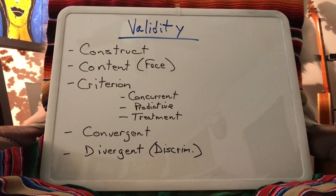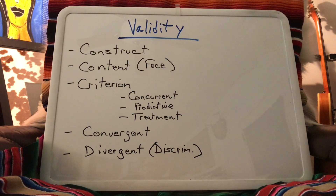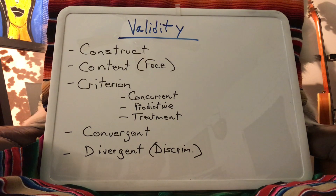Getting three professors together to observe, rate, and compile data is incredibly time-consuming, so it's really helpful if a simple pencil-paper or computerized test can accurately substitute. With predictive validity, we hope to give a test that can predict future performance — such as the SAT, ACT, or GRE. We know these can predict to some extent your first-semester GPA in college or graduate school, though they're not terribly strong predictors. The goal is to use a test now to help predict how you will do in the future.